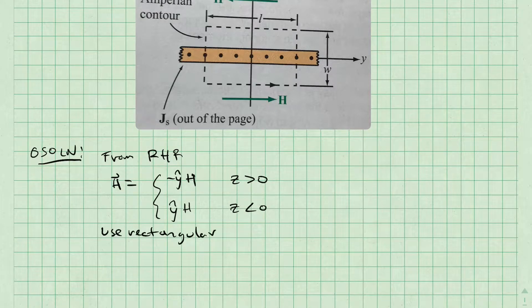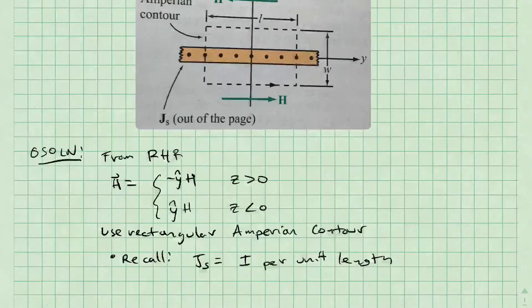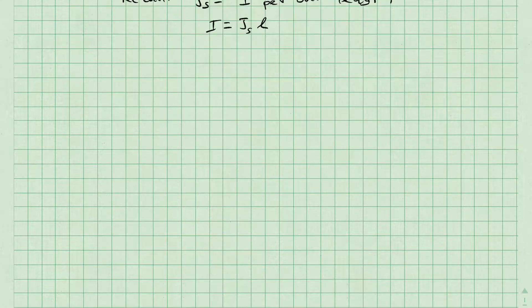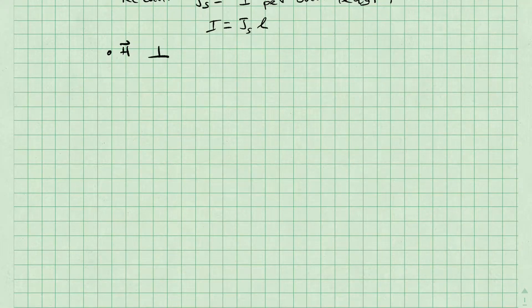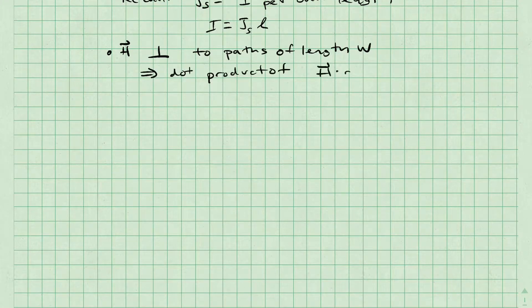We will use a rectangular Ampereian contour to help us find H. We need to remember that current density is current per unit length, so the current I is going to be equal to Js times l. We also notice that H is perpendicular to the paths of length w on my contour, so for these parts, the dot product of H and dl is zero.